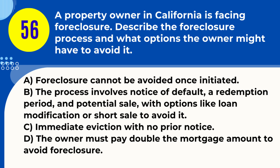Question 56. A property owner in California is facing foreclosure. Describe the foreclosure process and what options the owner might have to avoid it. A. Foreclosure cannot be avoided once initiated. B. The process involves notice of default, a redemption period, and potential sale, with options like loan modification or short sale to avoid it. C. Immediate eviction with no prior notice. D. The owner must pay double the mortgage amount to avoid foreclosure. Answer: B. The process involves notice of default, a redemption period, and potential sale, with options like loan modification or short sale to avoid it. Explanation: In California, foreclosure involves legal steps like a notice of default and redemption period, with options for the owner to avoid it such as loan modification or arranging a short sale.